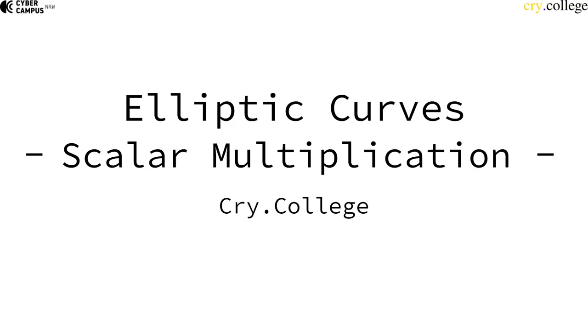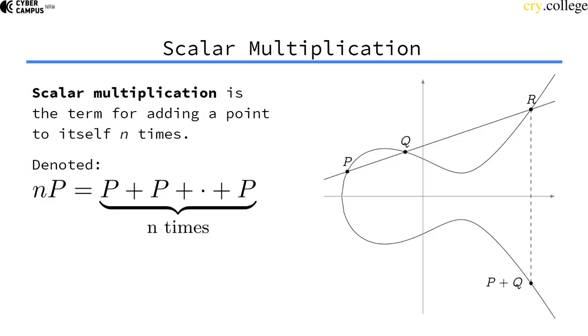Another concept we need to introduce is scalar multiplication because that's what we actually use in cryptographic systems. So scalar multiplication is just a fancy term of saying adding a point to itself multiple times.